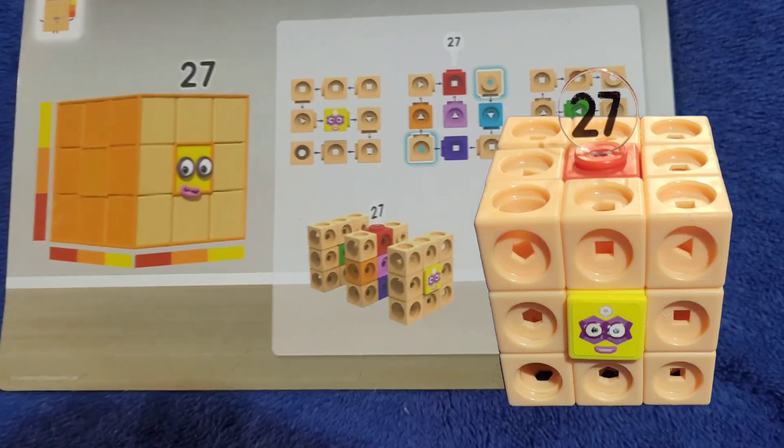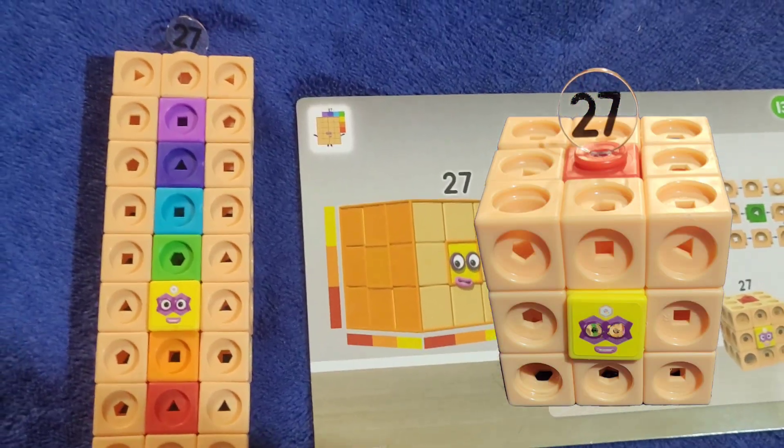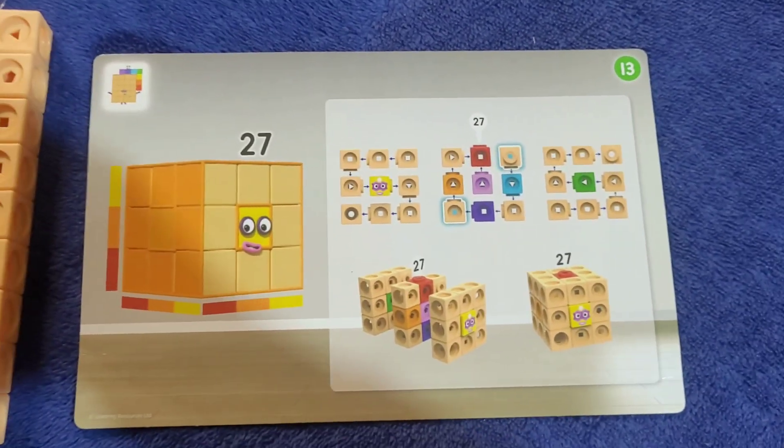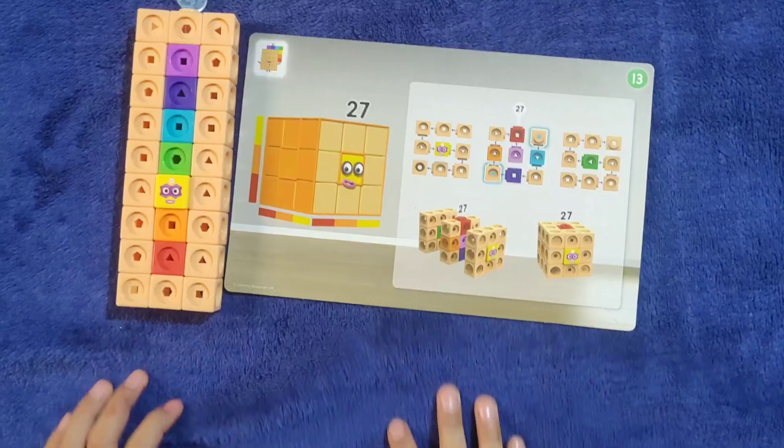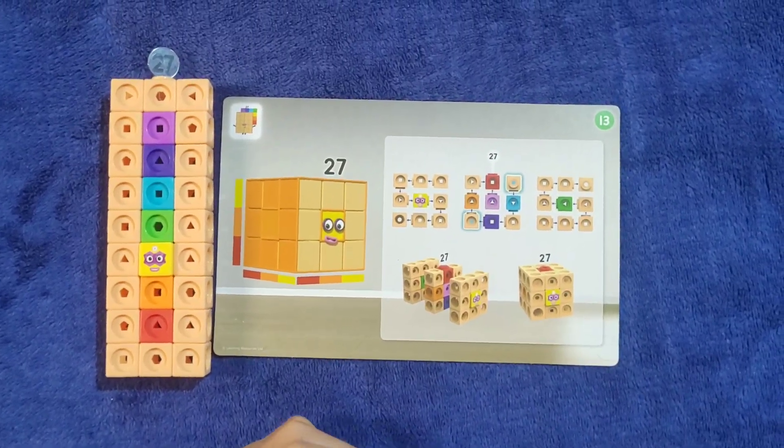Hi and today we are going to build Numberblocks 27 as a cube shape. This is card number 13 from the Numberblocks 21 to 30 activity set. Let's start building.